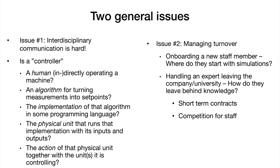Depending on who you're talking to, you'll get very different answers, and very different interpretations even within the same answer of what a controller actually means. This extends broadly to the domains of electricity systems, heating systems, and so forth. The second issue is that we need to manage turnover. In academia, that means many short-term contracts — post-docs, PhDs coming in and out. In industry, there's reliance on short-term contracts, contractors, and general competition for staff.